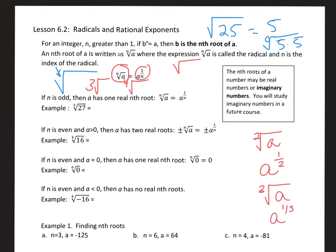In general, we have four different situations. If n is odd — if the root is odd — then a has one real root. So the cube root of 27 is just 3, because 3 times 3 times 3 is 27. The third root or cube root of 27 is one answer: positive 3. If n is even and a is greater than 0, so the number underneath the radical is greater than 0, then a has two real roots.